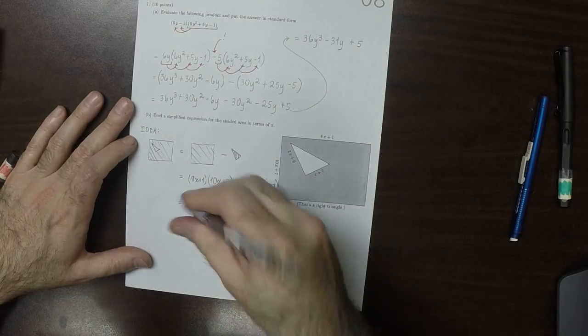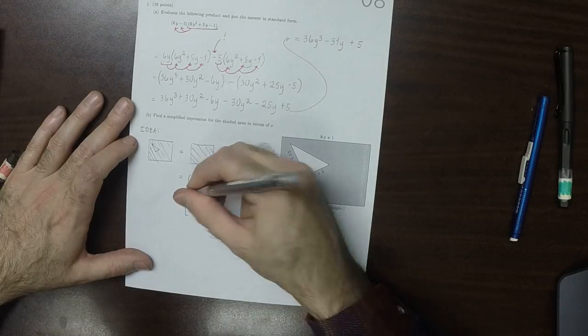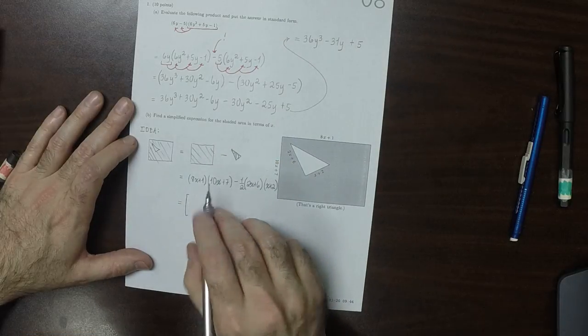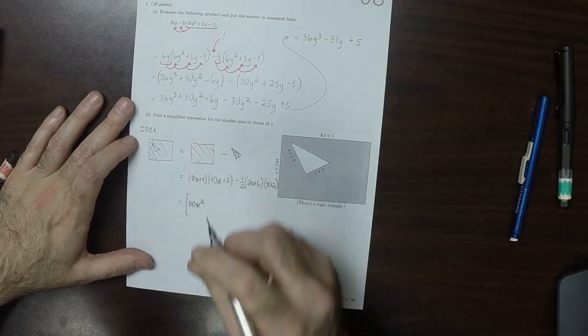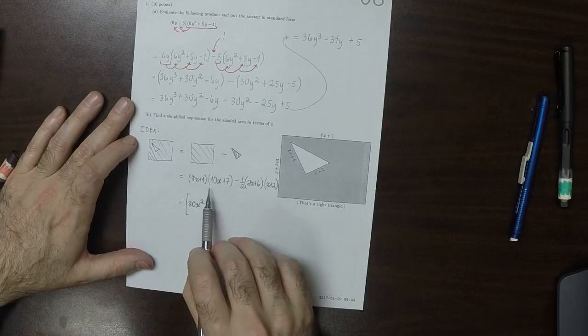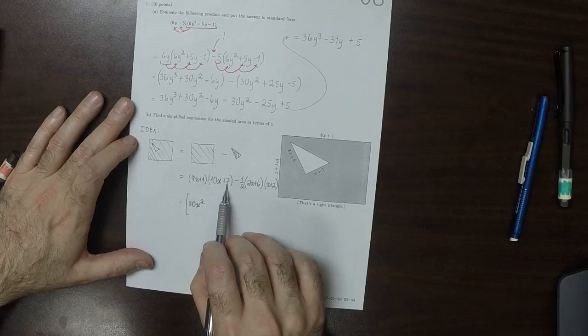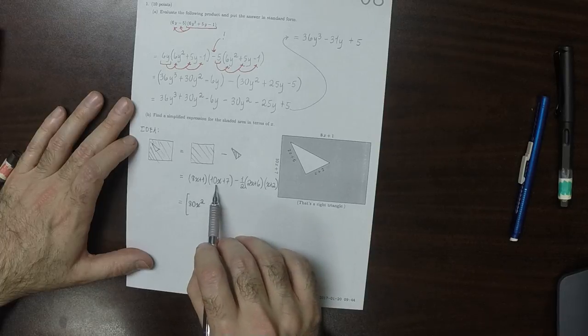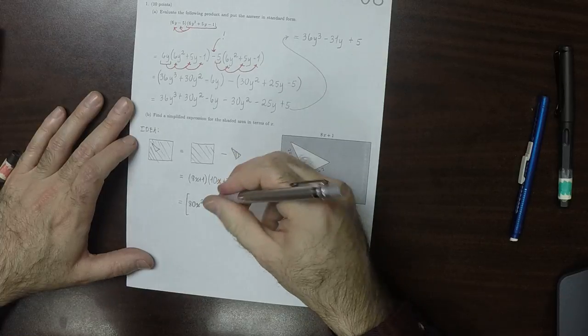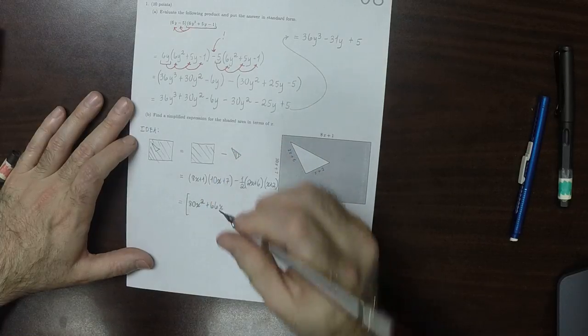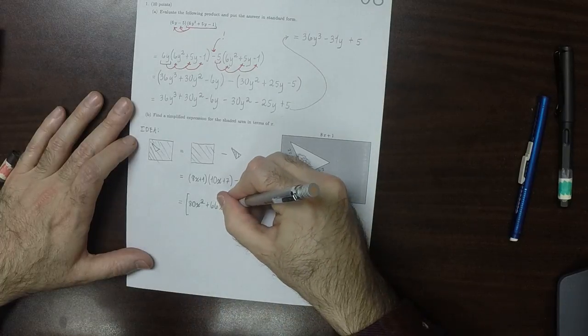So now all that's left is to multiply and collect. Okay, so foiling this first one. So I'll write this in parentheses. So 8x times 10x, that's 80x squared. O and I in foil, that would be 56x plus 10x, so that would be plus 66x. That's O and I together. And then the L term is 7, so plus 7.